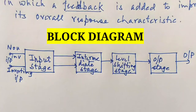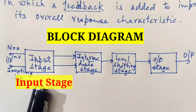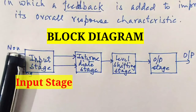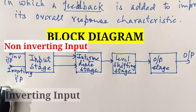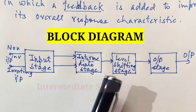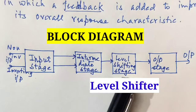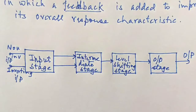This is the block diagram of an op-amp with four blocks, which is why it is a multi-stage amplifier. The first block is the input stage, which consists of two inputs — the non-inverting input and the inverting input. The second stage is the intermediate stage, the third is the level shifting stage, and the fourth is the output stage, from which the output of the op-amp is derived. The input stage is a dual input balanced output differential amplifier.